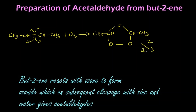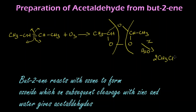We are going to react this ozonoid with zinc and H2O, that is water. The bond gets cleaved, and we get two molecules of CH3-CHO, that is acetaldehyde. The remaining H2O and O will get removed as H2O2, that is hydrogen peroxide.